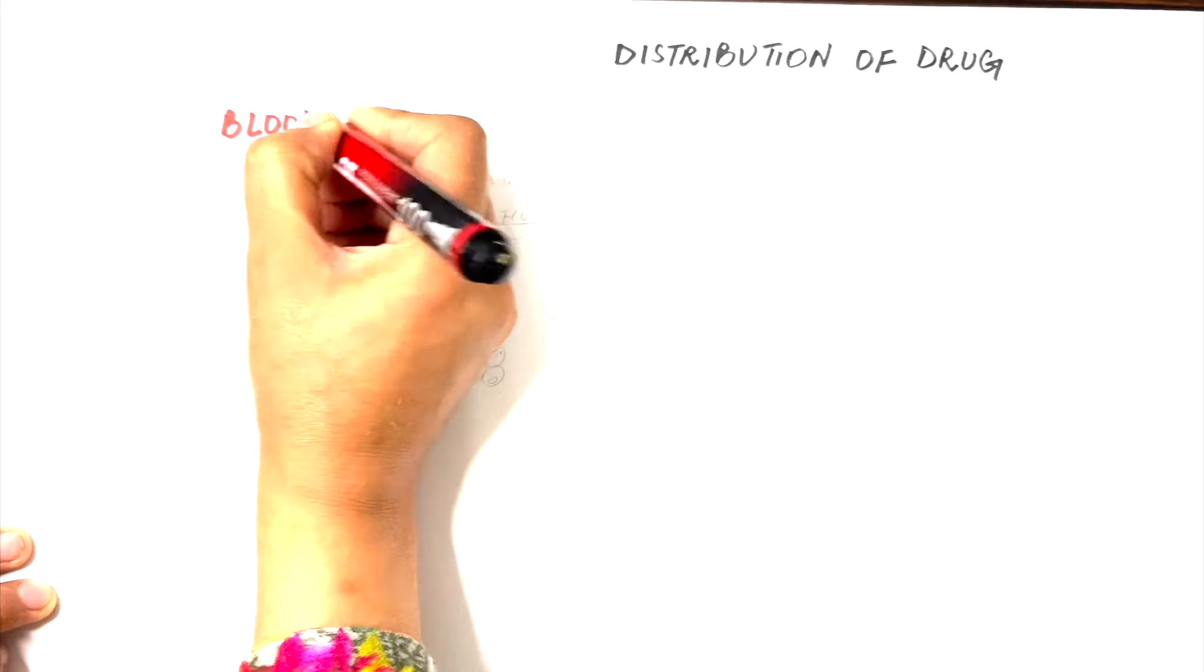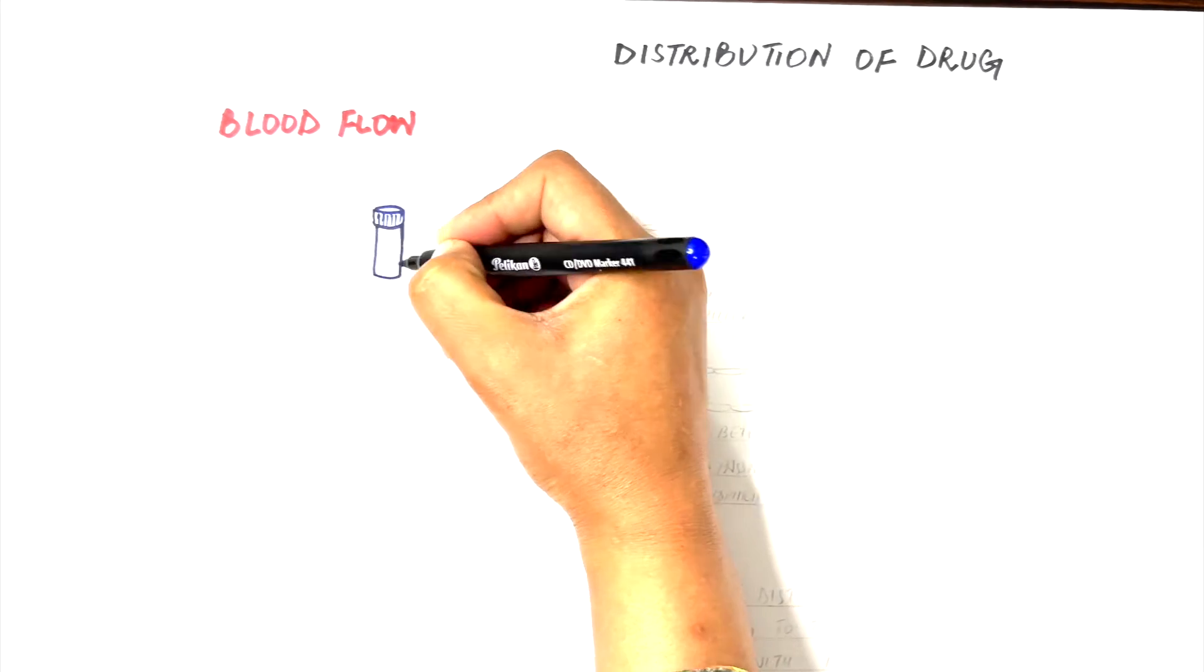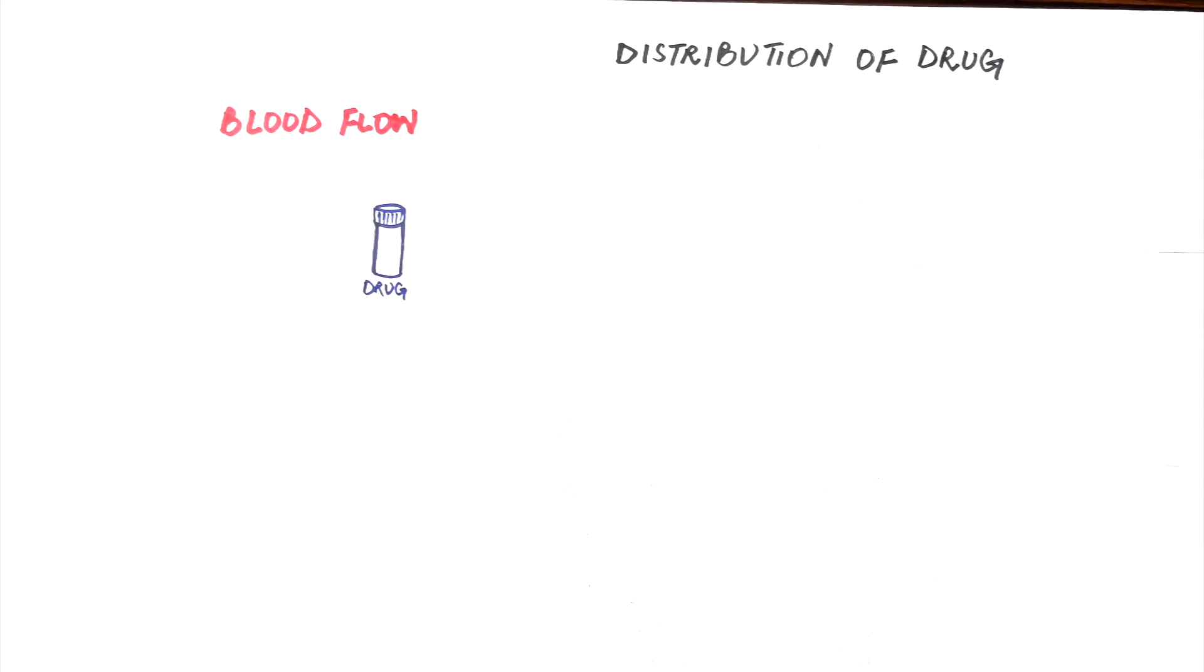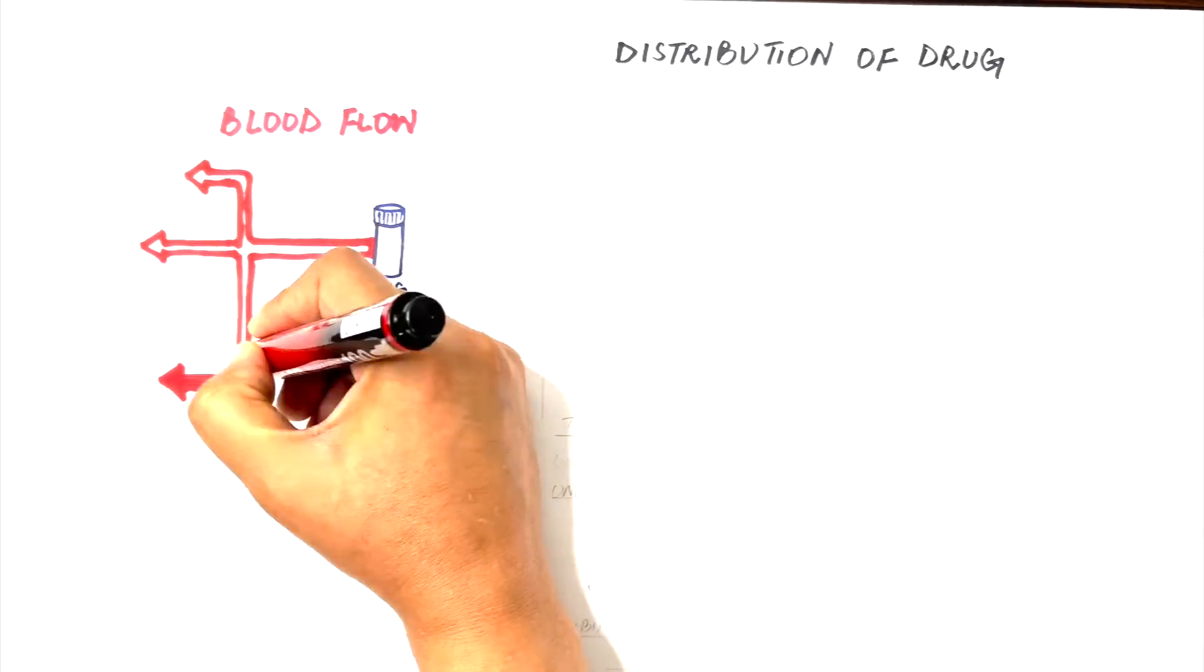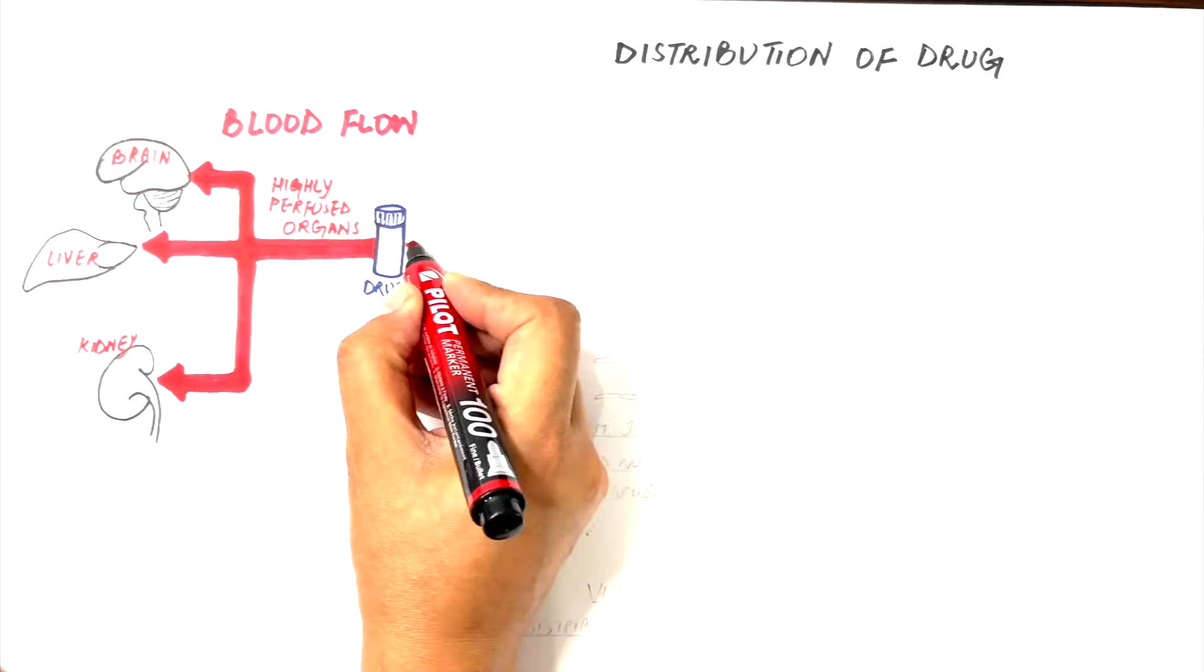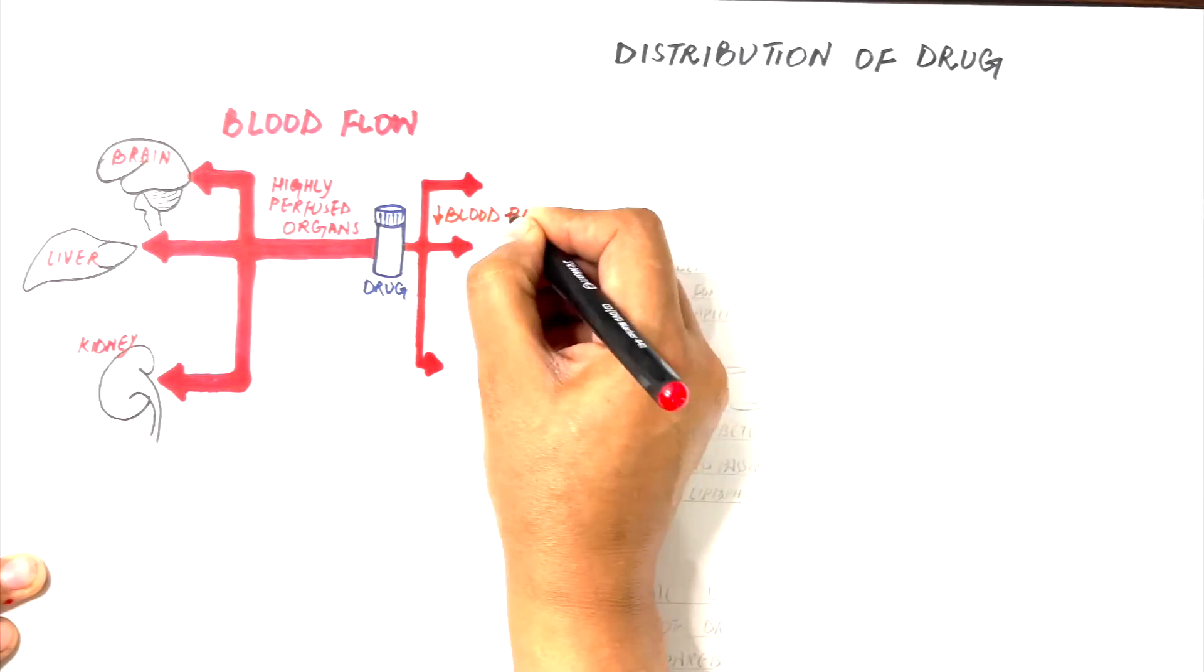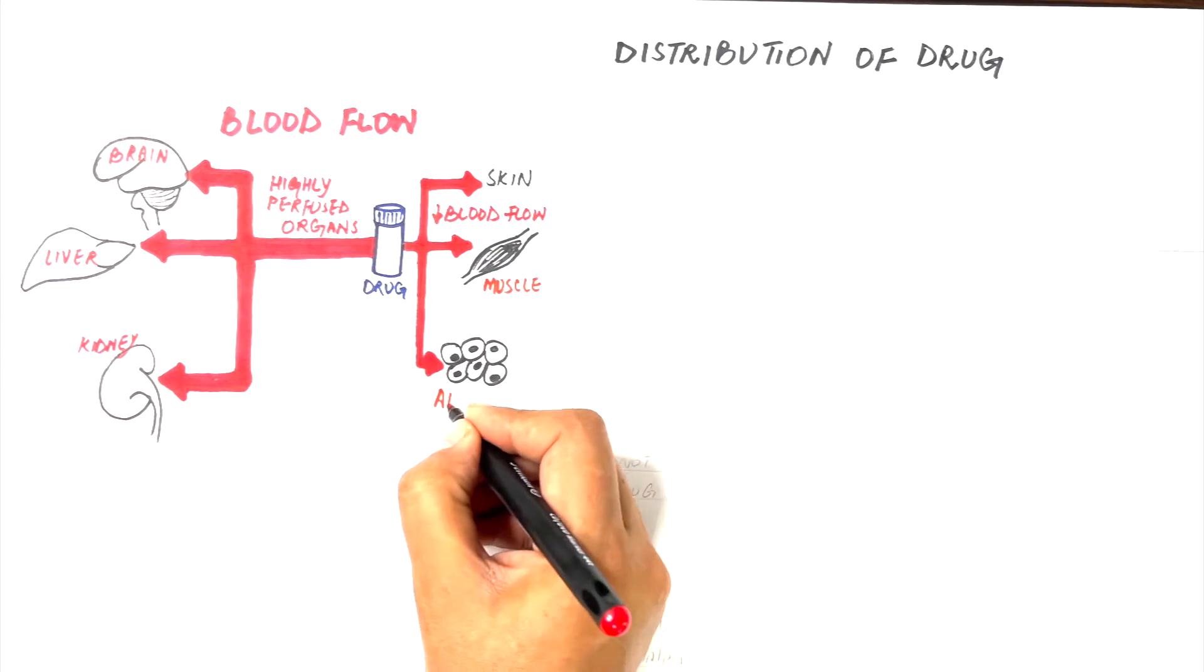Starting with the blood flow, the higher the blood flow, the more rapid will be the distribution of the drug. The rate of blood flow to different tissues in the body differs and depends on the vascular supply of that region. The highly perfused and vessel-rich organs of the body are the brain, liver and kidneys. However, the less perfused organs of the body are the skin, muscles and adipose tissue. But then this blood flow is not the only factor which we will have in consideration.